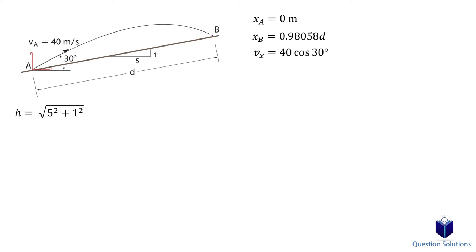In the vertical direction, we have the starting point at 0 meters. Point B is at D multiplied by 1 over hypotenuse. We can also write that in decimal form. The velocity is 40 sin 30 degrees. Don't forget gravity, which is negative 9.81 meters per second squared.